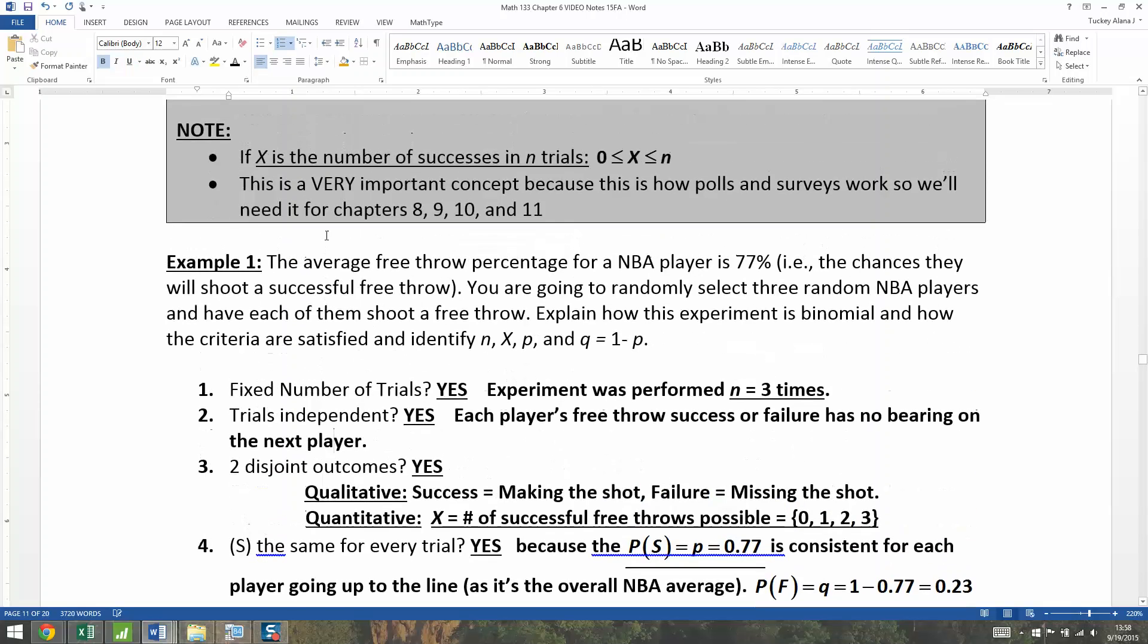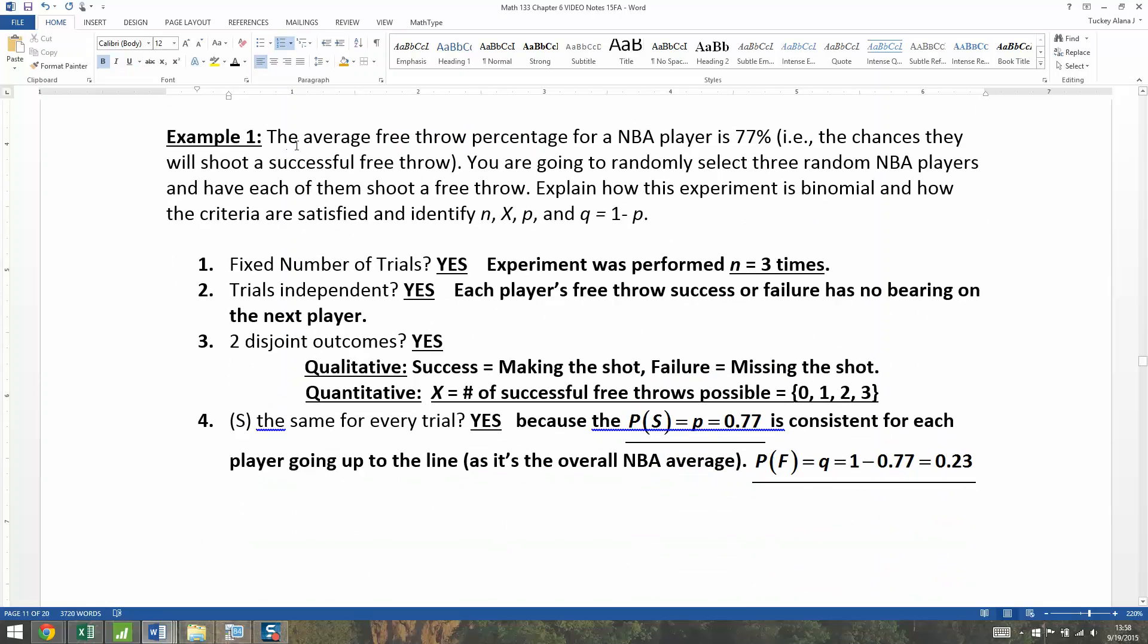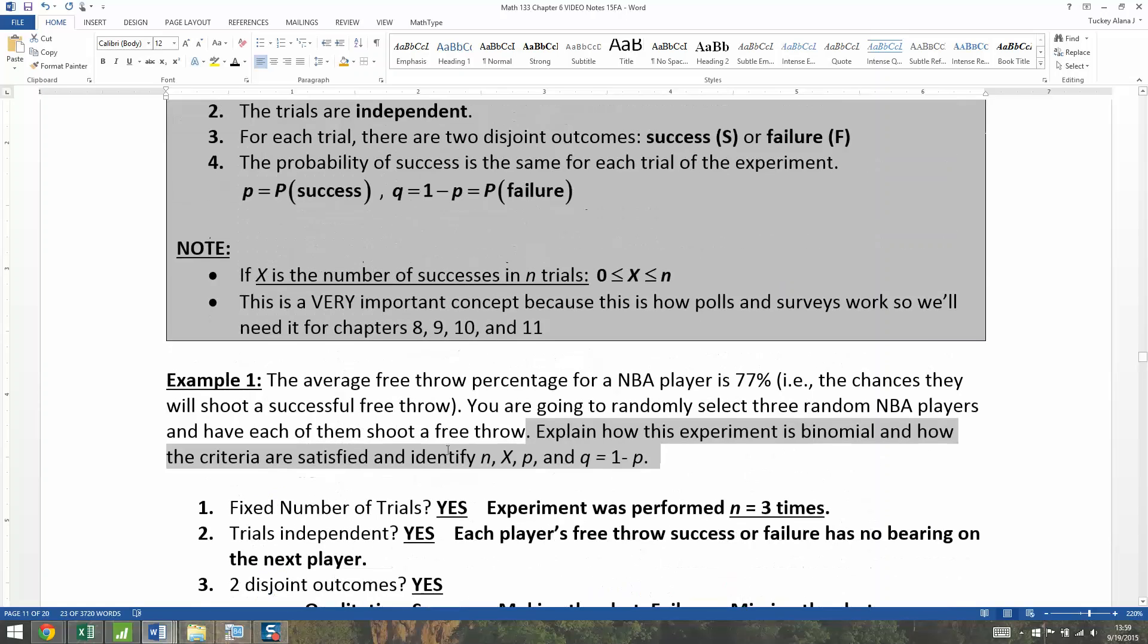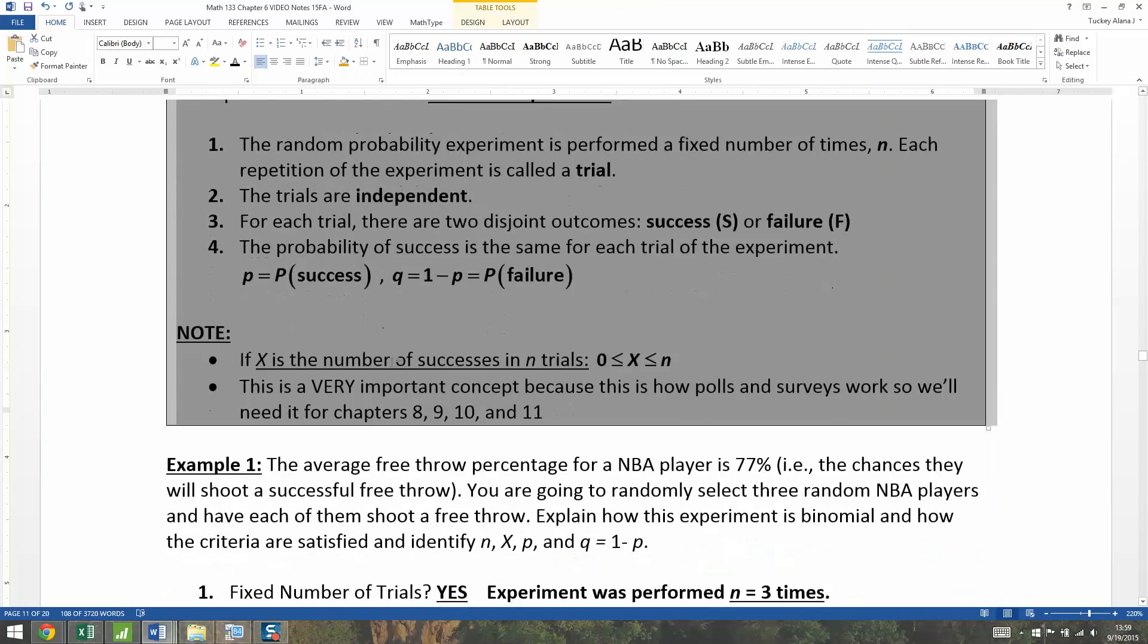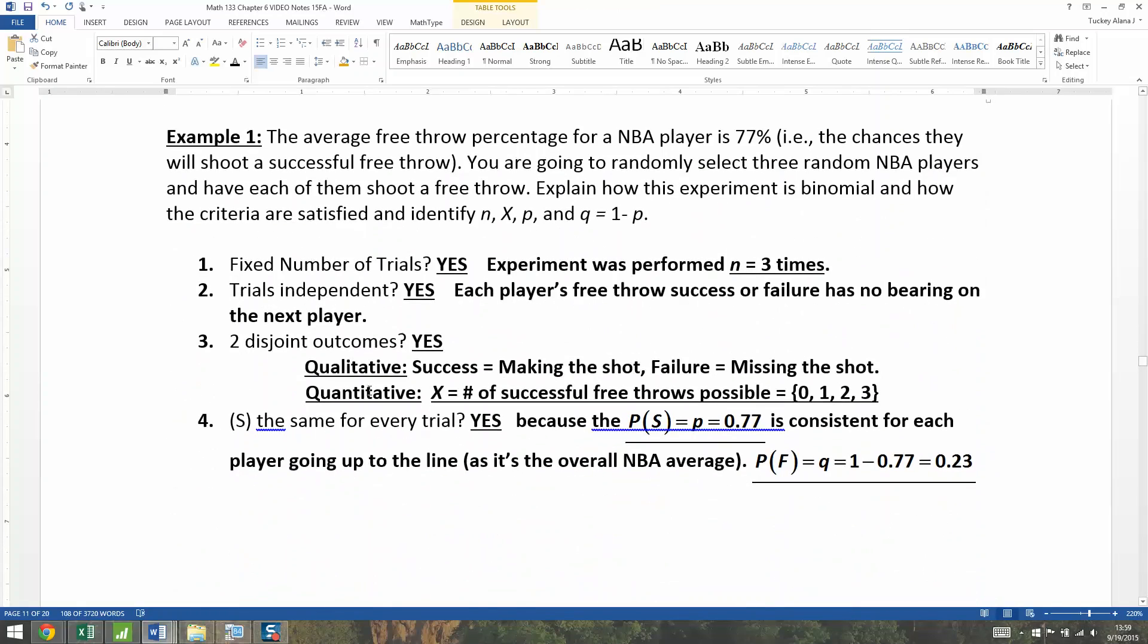You have to do that, believe it or not, for every problem that's like this, unless you're told ahead of time that it's binomial. But when you're asked to explain how this experiment is binomial and how the criteria is satisfied, you have to write all this down, which means it would be very wise of you to put this entire box essentially right in your note sheet for the exam. Because you're going to have to explain, you have to write down each one and explain them all.